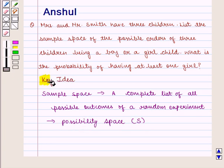With this key idea, let us proceed to the solution. In this question, we are given Mrs. and Mr. Smith have three children, and we need to list the sample space of the possible orders of three children being a boy or a girl child, and we also need to find the probability of having at least one girl.